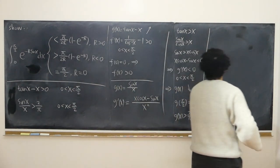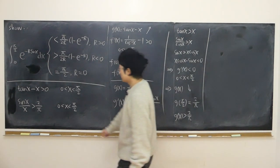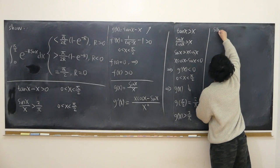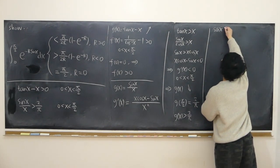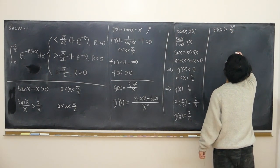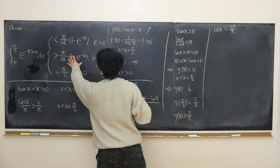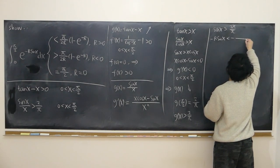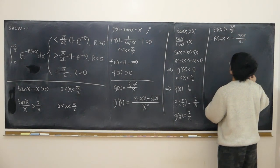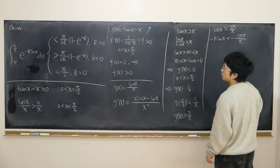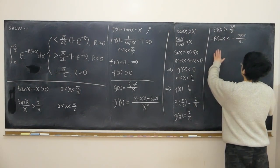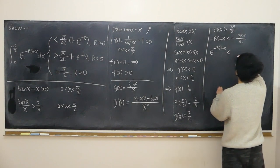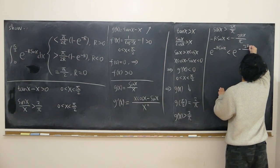I'm done with the second lemma. Now I can multiply both sides by x — x is already positive — so sine x is larger than 2x over pi. When r is positive, I can multiply both sides by minus r and change the direction, giving minus r sine x less than minus 2rx over pi. Since e to the power of x is increasing, therefore applying the exponential: e to the power of minus r sine x should also be less than e to the power of minus 2rx over pi.